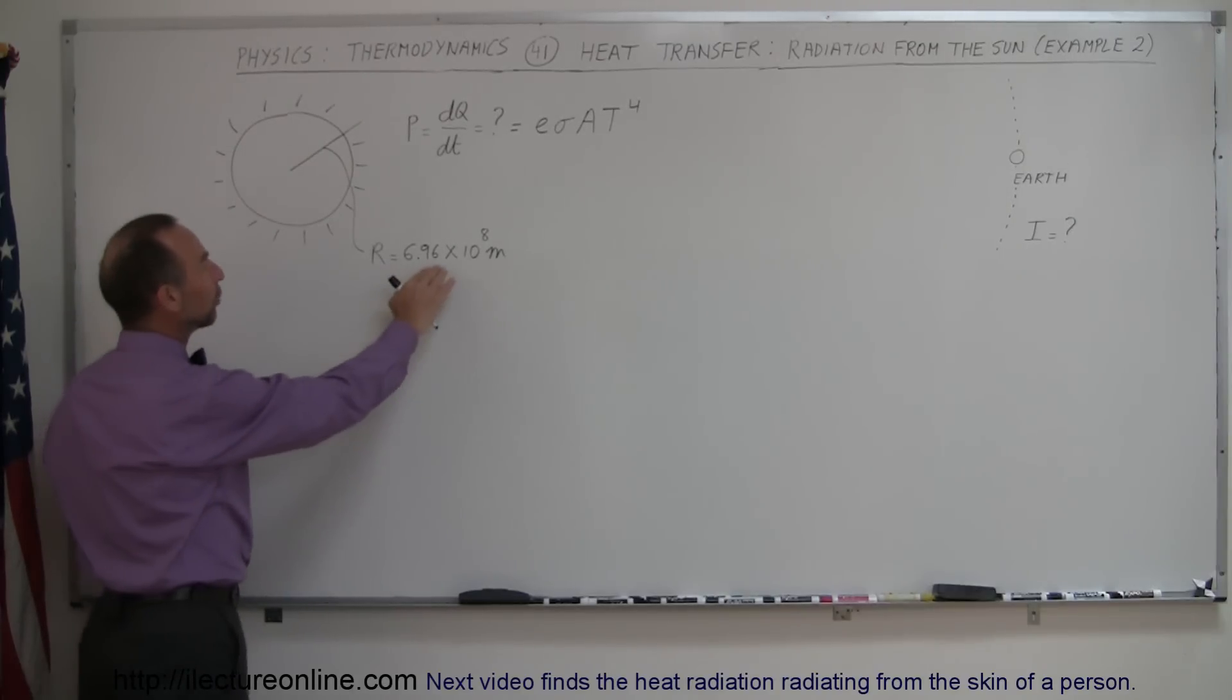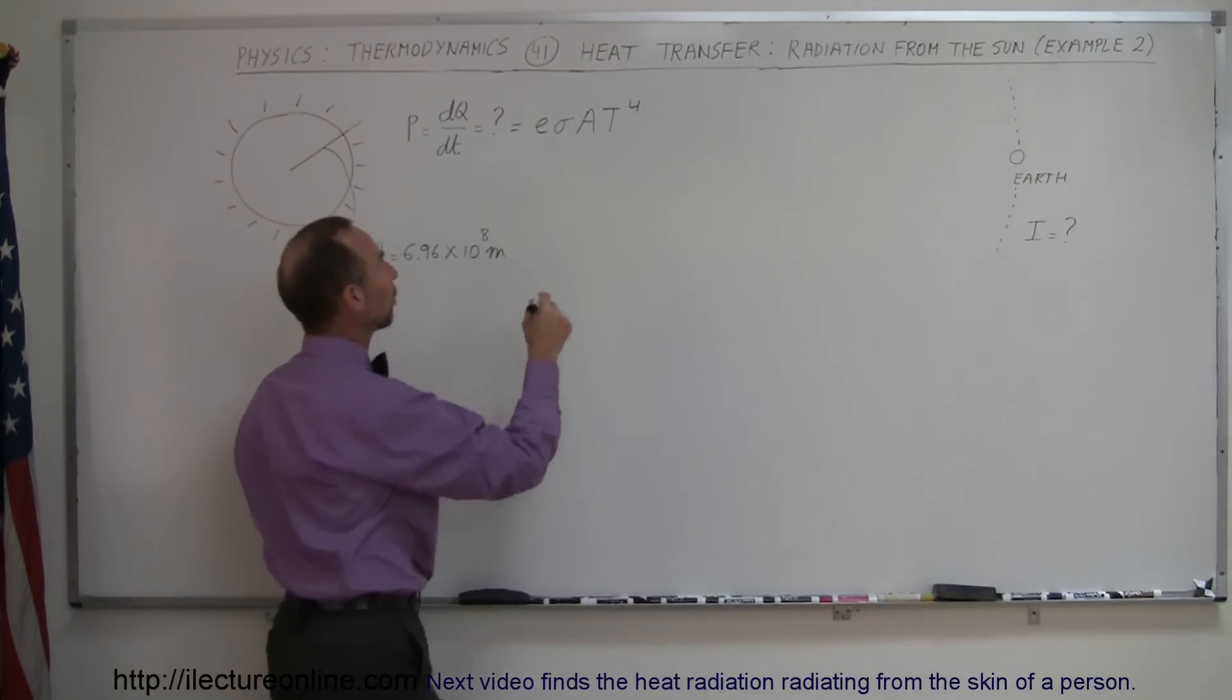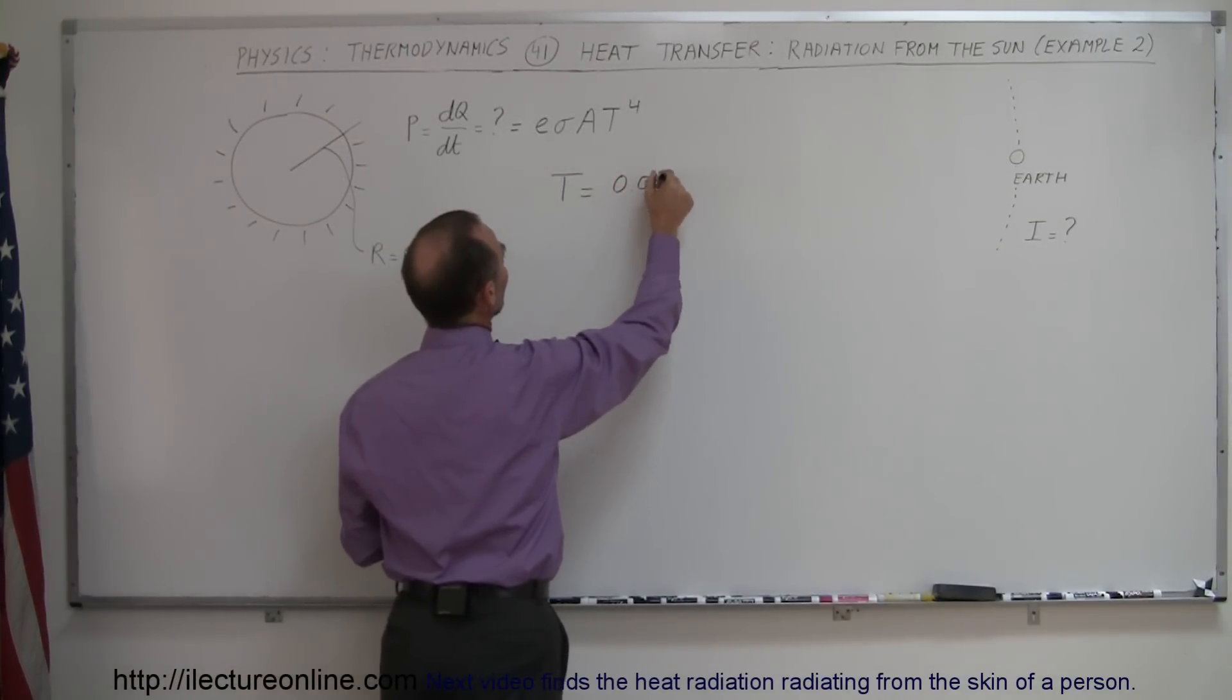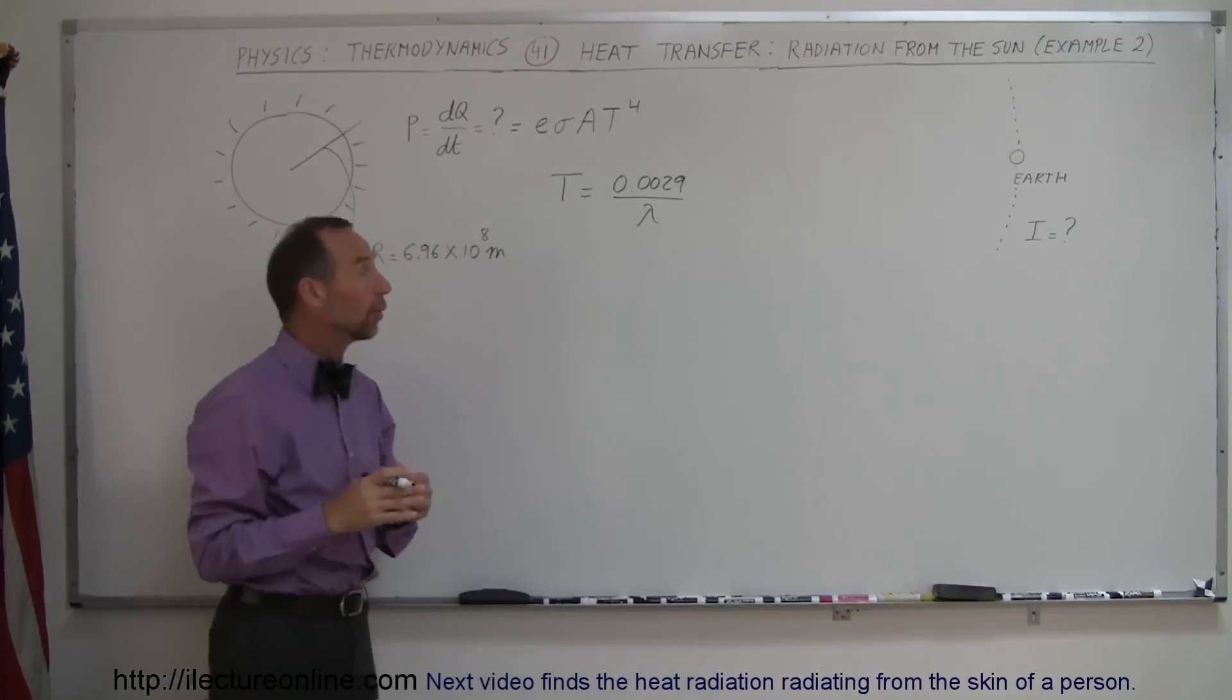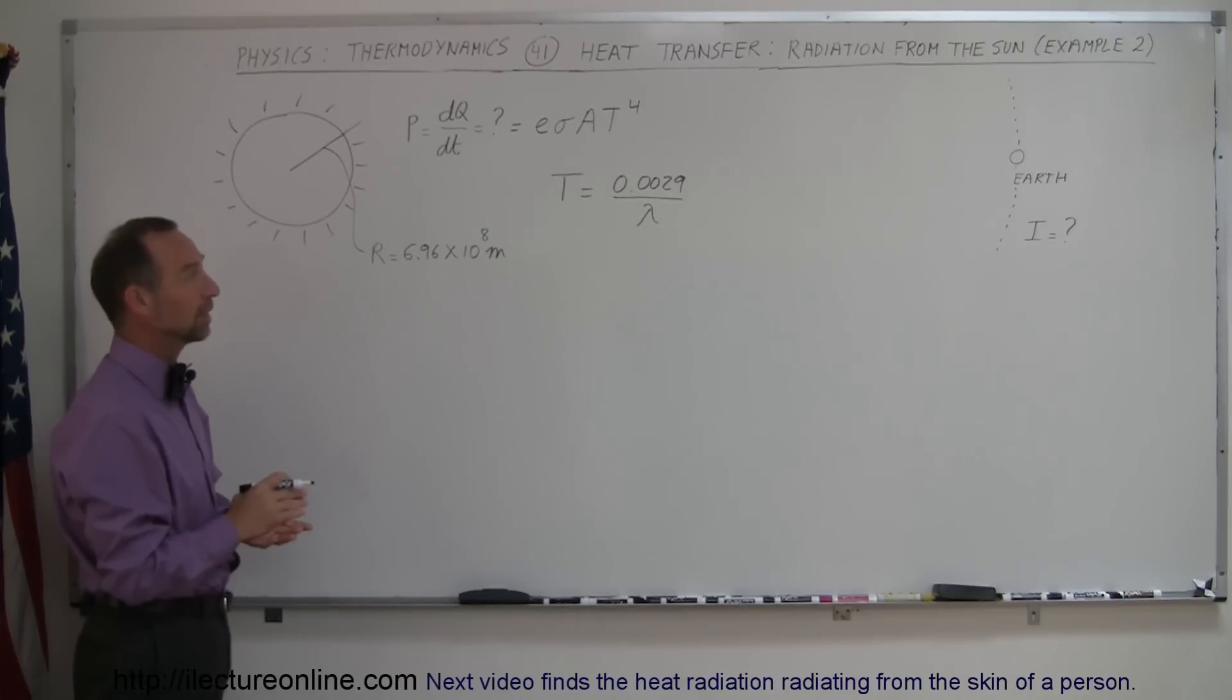Now, we already know the radius, but what about the temperature? Well, if we use Wien's law, Wien's law says that the temperature of any object radiating is equal to 0.0029 divided by the wavelength of the predominant radiation coming from the sun. And for the sun, that is about 500 nanometers.